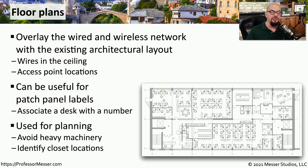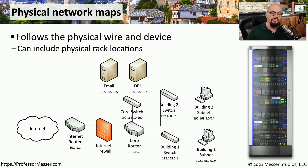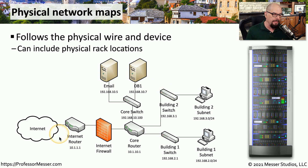If we need to change part of the floor plan or we need to move equipment around, we can see exactly what impact that might have. Another good map to have would be one that shows how all of our equipment may be connected to each other. This could be shown as a physical network map where we have individual wires and devices, and we show how each one of those devices is connected to the other.